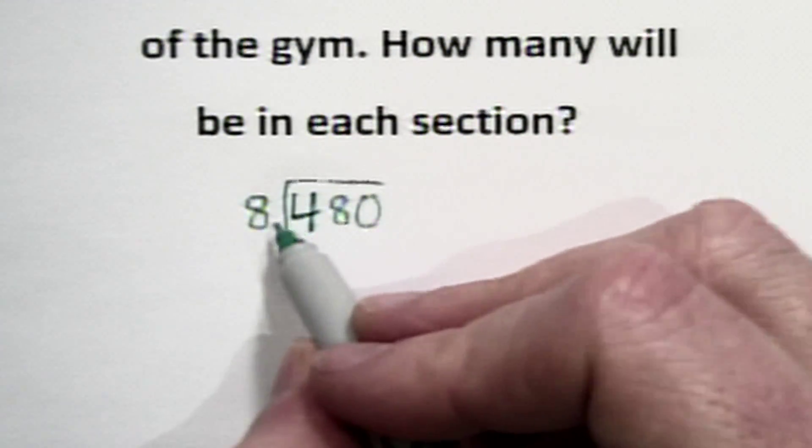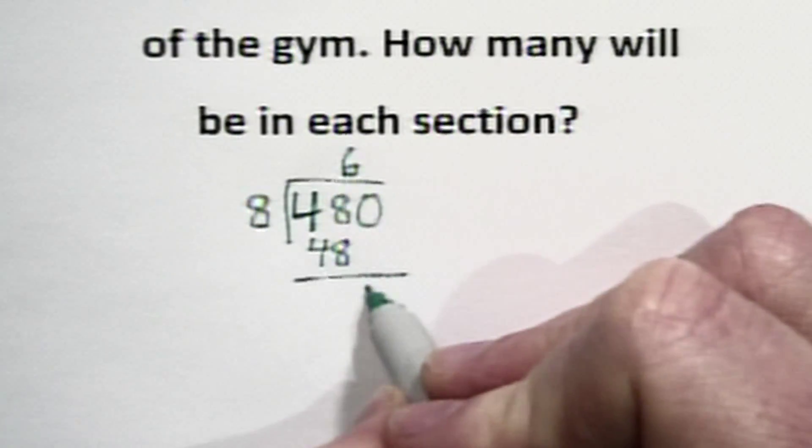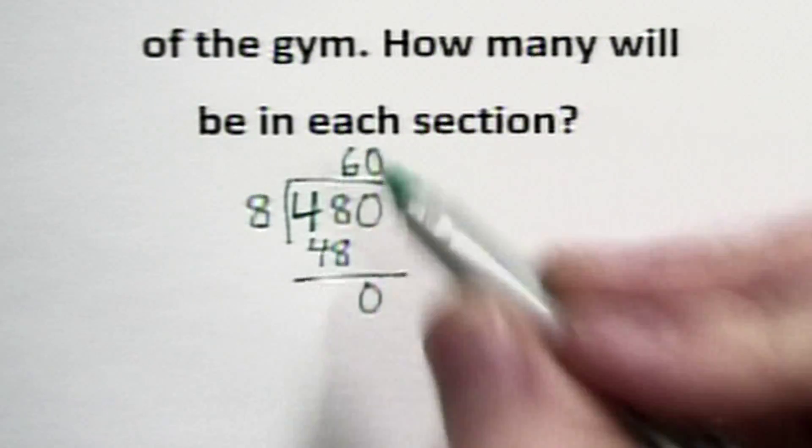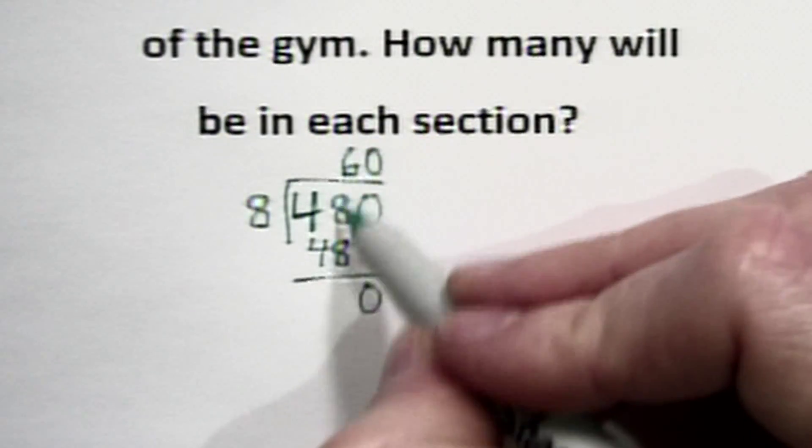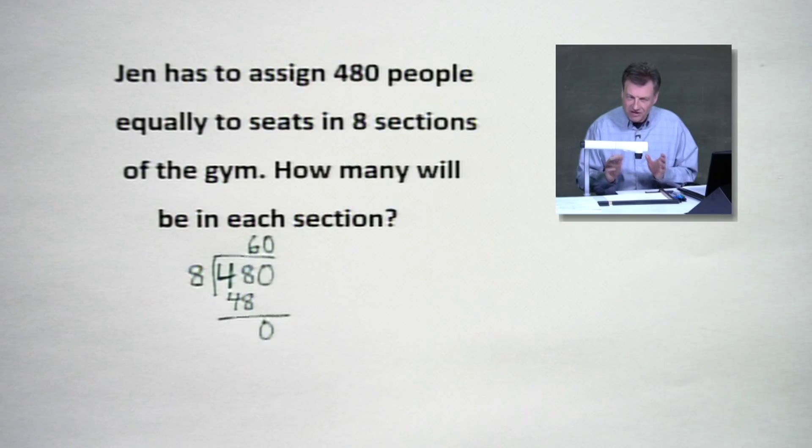8 goes into 48 six times, and we'll pick up 6 times 8, which will give us 48. Just don't forget there's a zero waiting, and there's got to be a zero in that final answer because we're going to put that 6 right above the 48. So in this case, there's going to be 60 of them on the average.